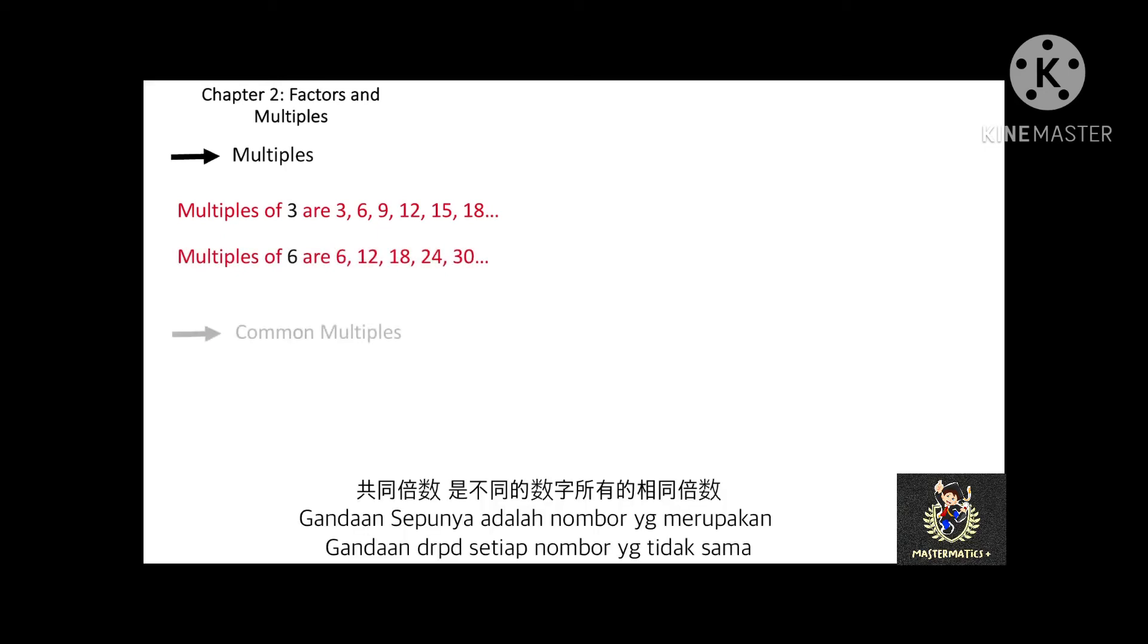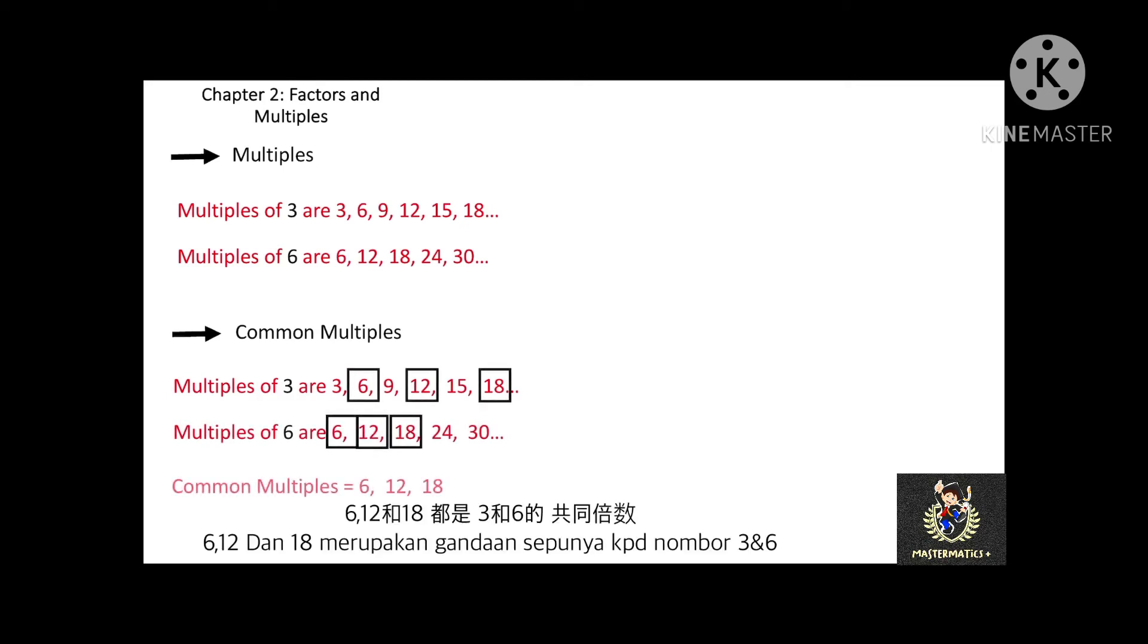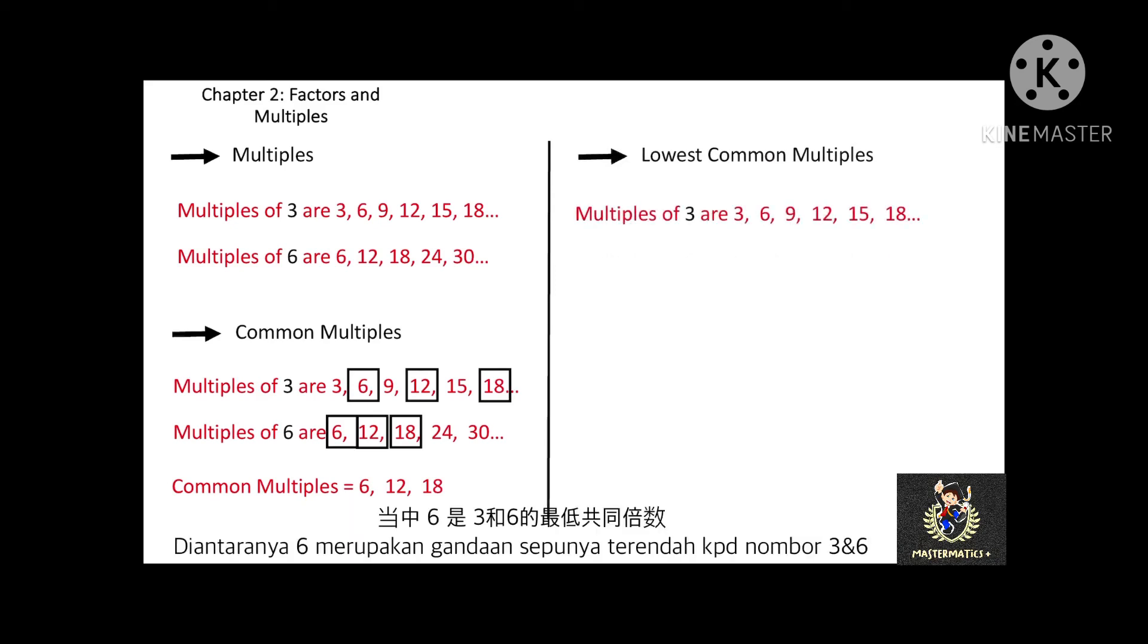If a number which is a multiple of 2 or more numbers, it is called the common multiples of those numbers. In this example, the common multiples of 3 and 6 are 6, 12, and 18. Of all these common multiples, 6 is the lowest common multiple of 3 and 6.